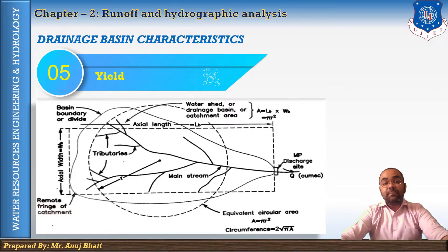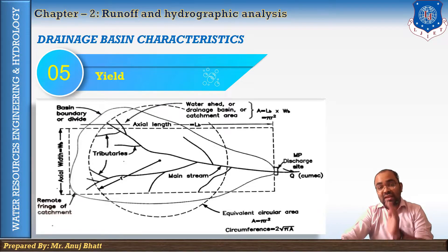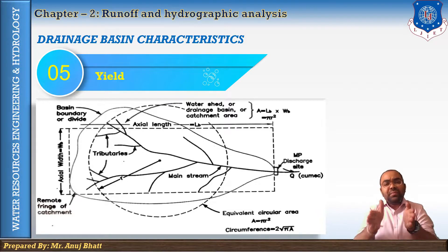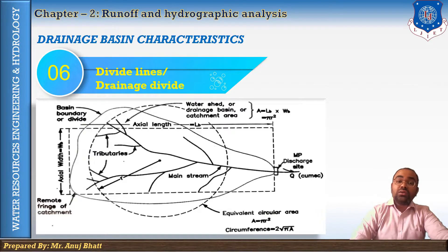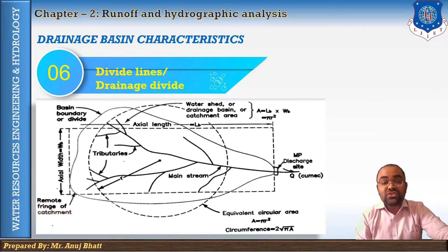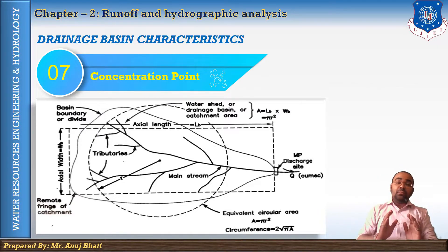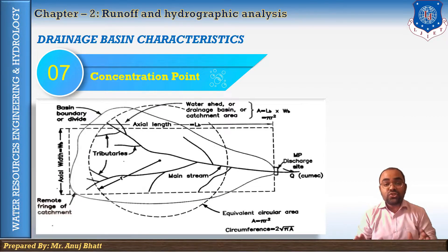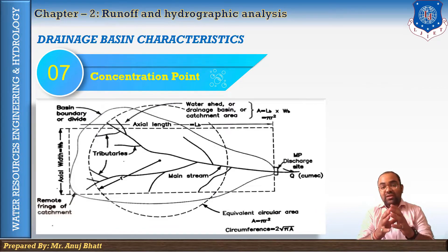The fifth is yield — the yield of drainage is the same as runoff, with the only difference that yield is expressed over a long period while runoff is expressed for a limited period of time. The next is divide lines or drainage divides — the boundary line along the topographic reach that separates two adjacent drainage basins is known as the drainage divide. The next is concentration point — a single point or location at which all the surface drainage from a basin concentrates as the outflow from the basin is known as the concentration point or measuring point.